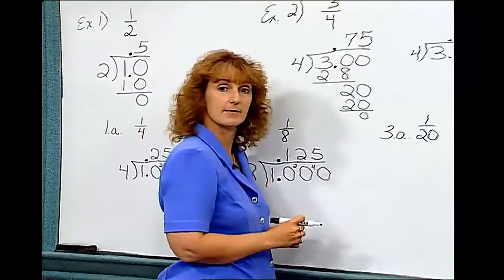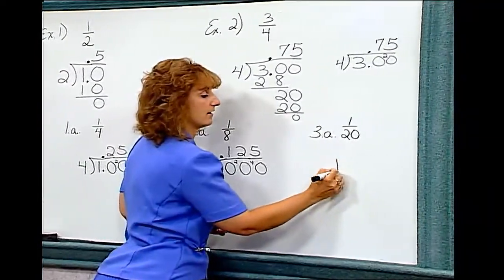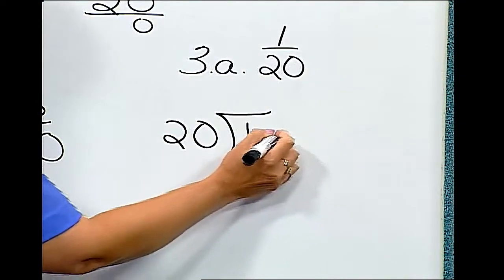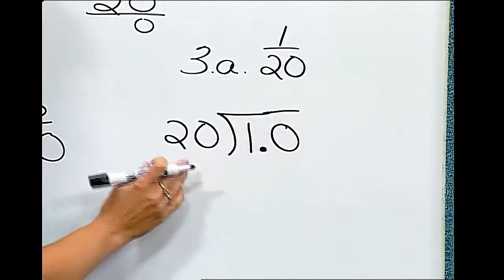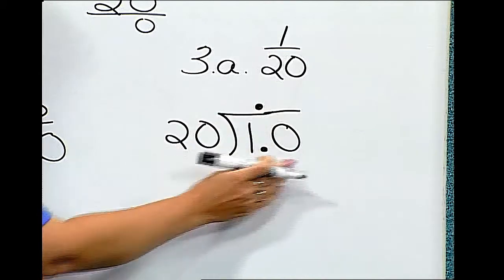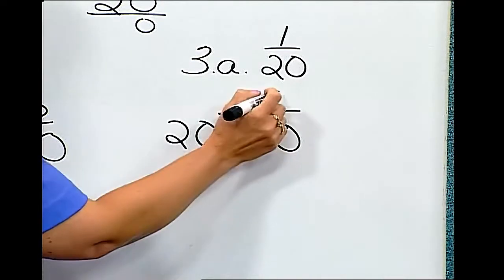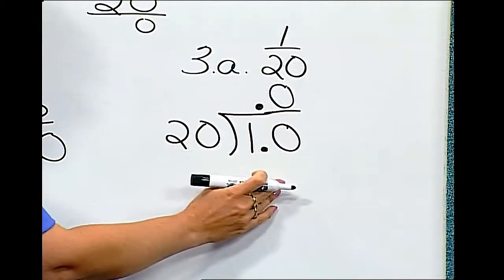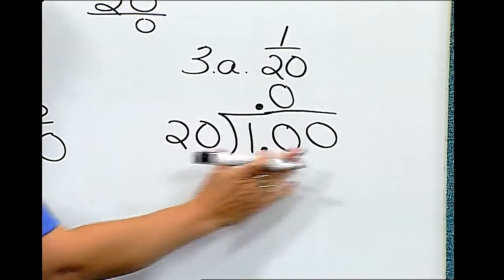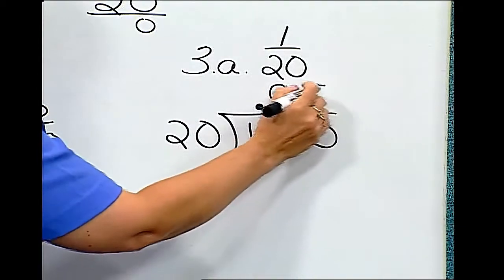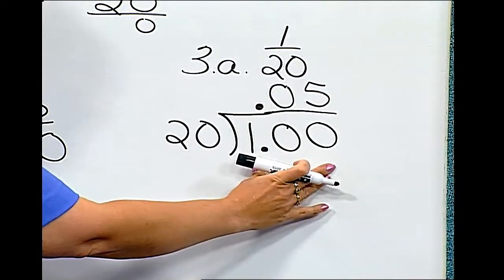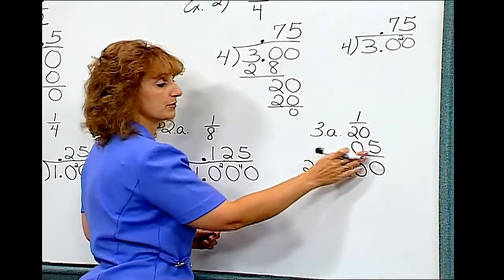Our last example is 1/20. 1 divided by 20. When I place my decimal point and 0, I'm already too small. Bringing that decimal point up, 20 does not go into 10 at all. So I must put a placeholder 0 there to start. Then I can put another 0 here and say 20 goes into 100 5 times. Since 5 times 20 is 100, I have no remainder. 1/20 is equal to 0.05.